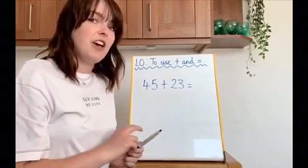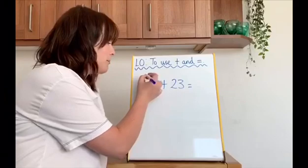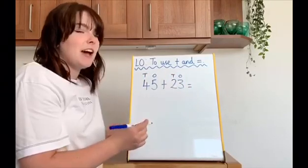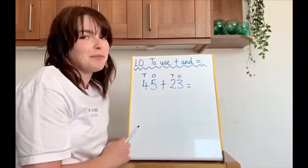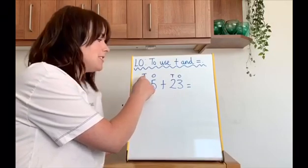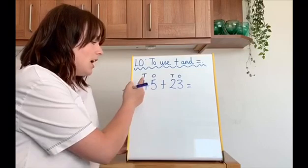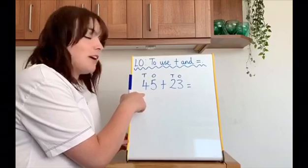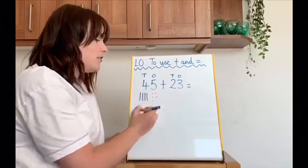Okay, our first step is to write TO above our numbers. See if you can tell your grown-up right now what T and O stand for. Did you get it right? T stands for tens and O stands for ones. I'm going to draw my chips and my peas now for my number, 45. So, I've got four tens and I've got five ones.